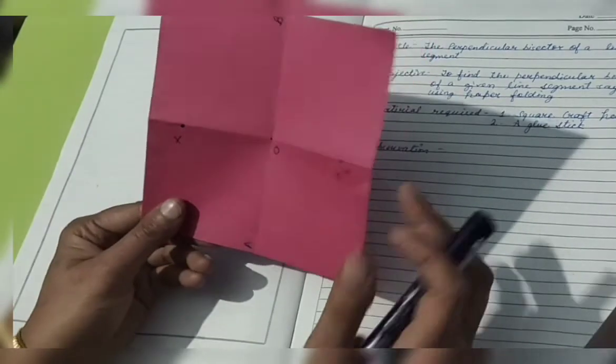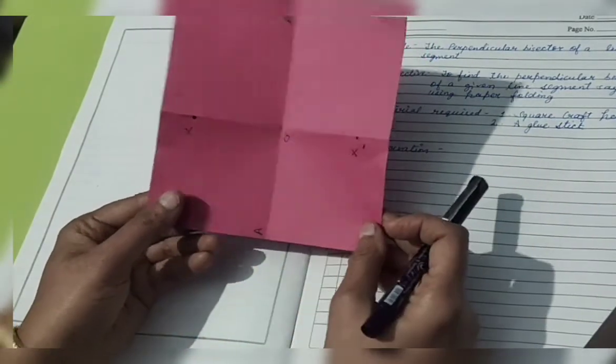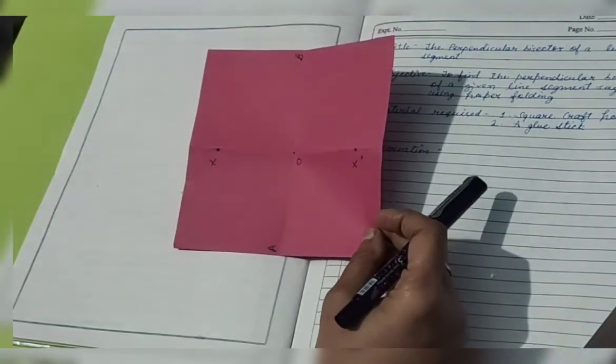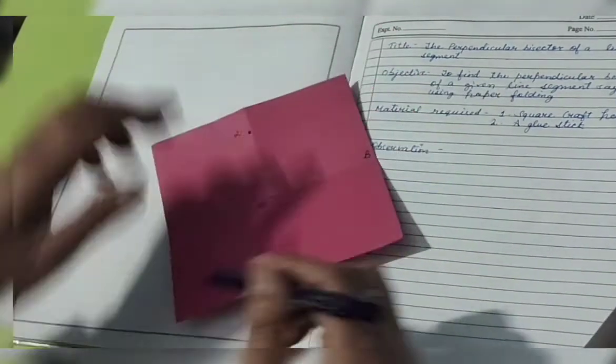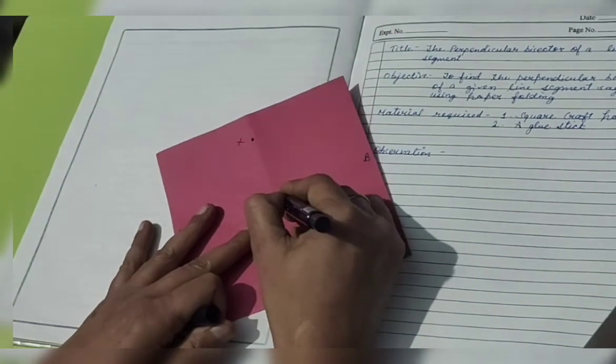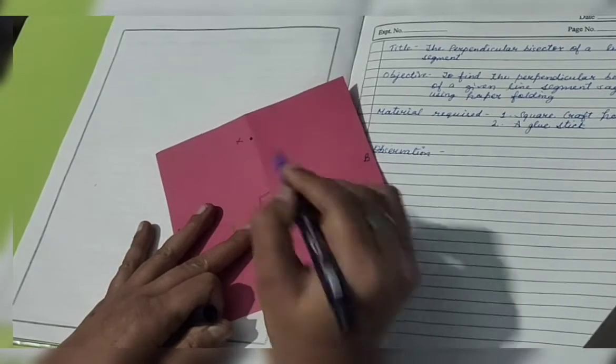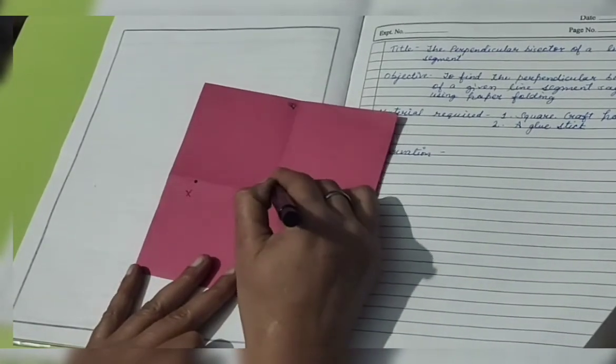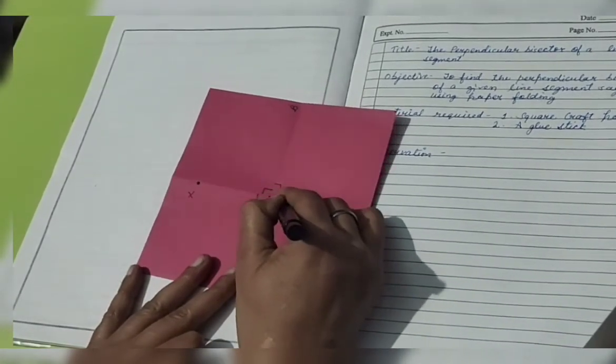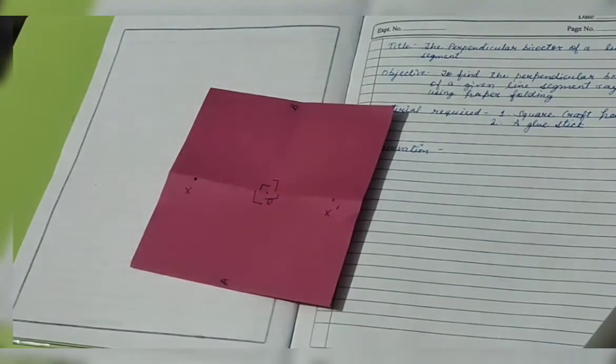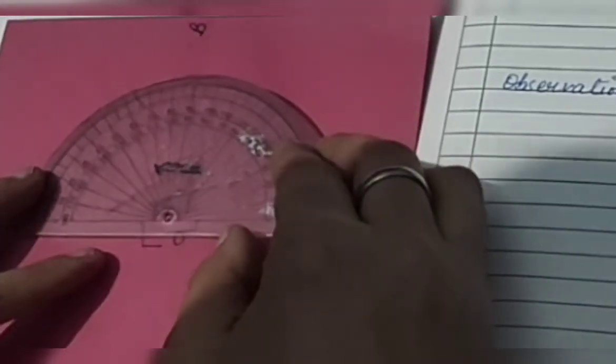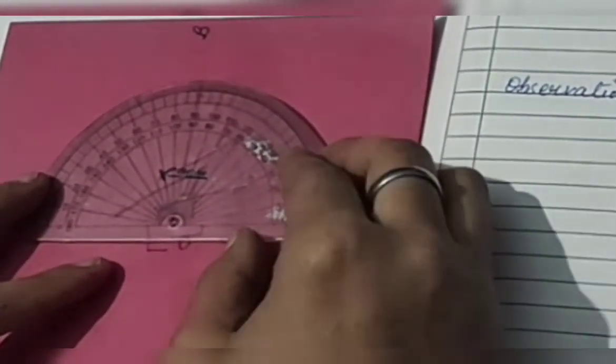So bisector. It becomes a bisector. Now what about the angle, 90 degree? We need to measure this and this angle. Any of the four angles you can measure. If they are 90 degree, it means this is a perpendicular also. So let us measure if it is 90 degree or not. I'm just coinciding the point O.